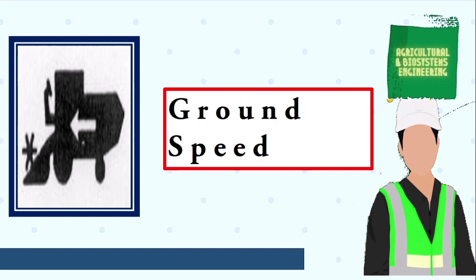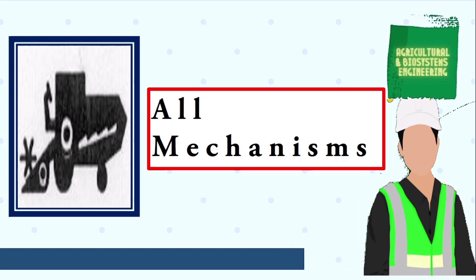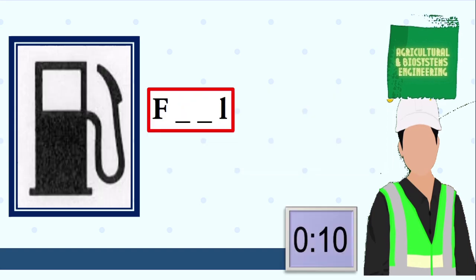The answer is ground speed. Next symbol, your 10 seconds starts now. The answer is all mechanisms. Next symbol, your 10 seconds starts now.